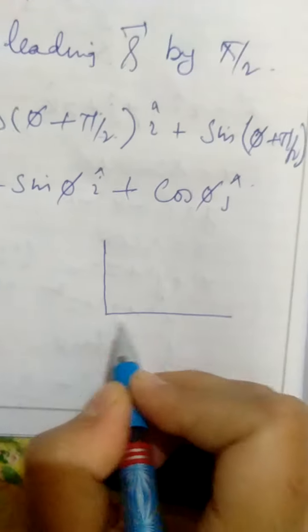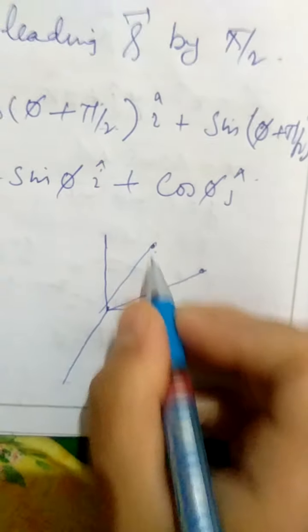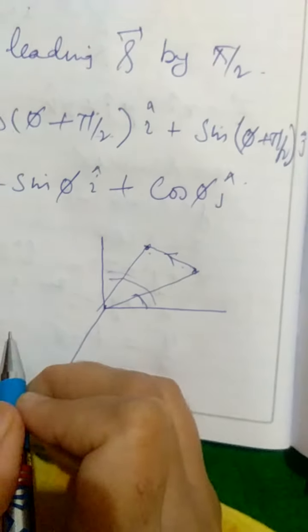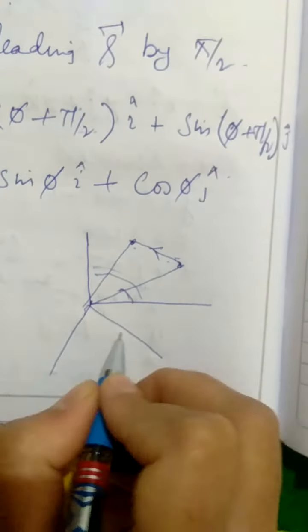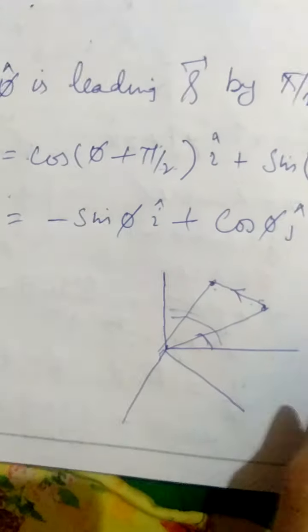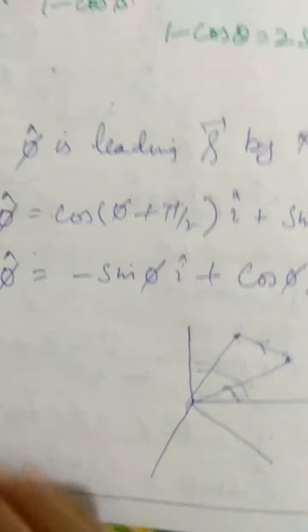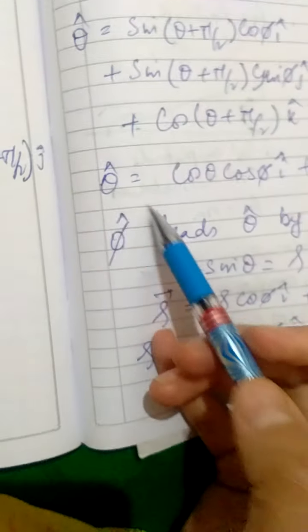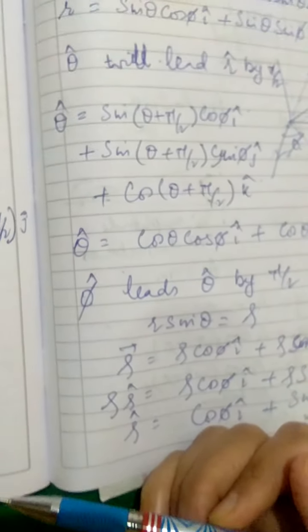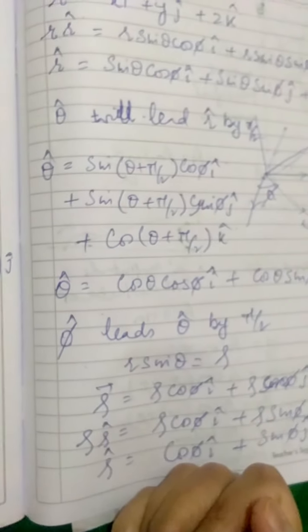Alternatively, we could use the same approach as in plane polar coordinates — choosing two points, defining vectors, and subtracting to find the resultant direction — arriving at the same result. This is the preliminary discussion about spherical polar coordinates. In the subsequent video, I will teach velocity and acceleration components in spherical polar coordinates. I hope this gives you some basic idea.